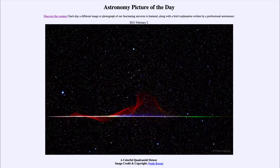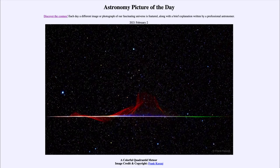Greetings and welcome to the introduction to astronomy. One of the things that I like to do in each of my introductory astronomy classes is to begin the class with the astronomy picture of the day from the NASA website at apod.nasa.gov. And today's picture for February the 2nd of 2021 is titled A Colorful Quadrantid Meteor.